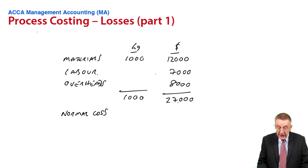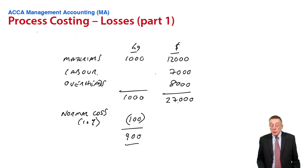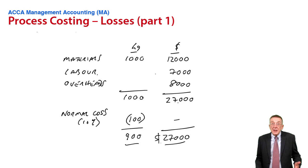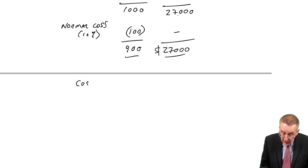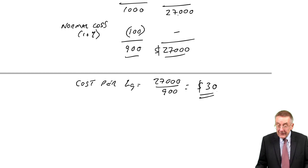Bring that into our costings. Our normal or expected loss, 10%, we put in a thousand so we expect to lose a hundred. And therefore we're expecting to end up with 900 having spent 27,000. And so what's the cost per unit or per kilo of what we now expect to produce? The cost per kilo: 27,000 for 900 expected units comes to $30. Every unit needs to be charged at 30.